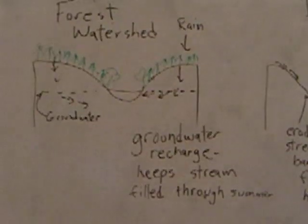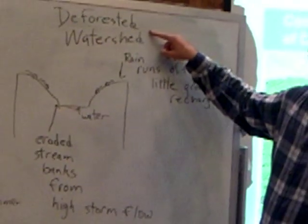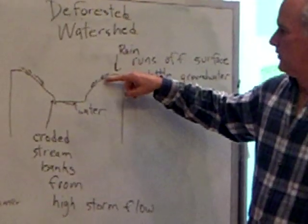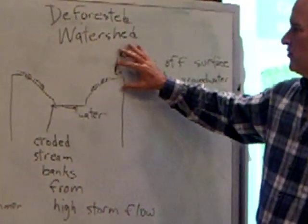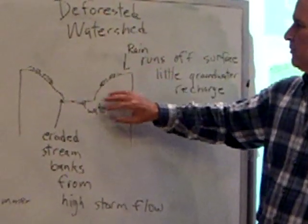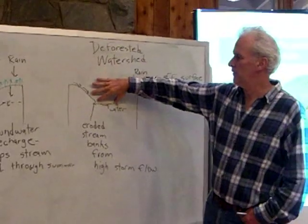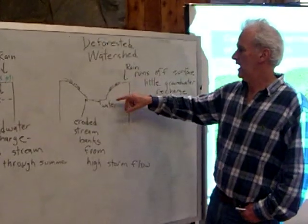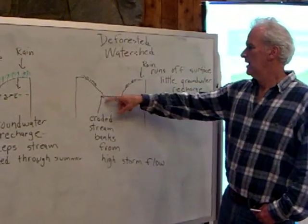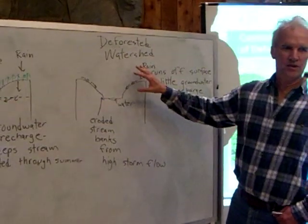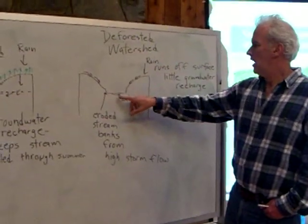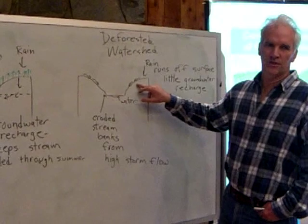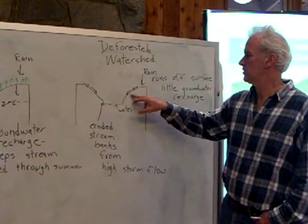In the deforested watershed, when you get rain, most of that water runs off the surface because there aren't trees there - it's just bare soil. What happens is you get a big swelling of the creeks and rivers when you have a degraded watershed like that, and it cuts the stream bank. Then a week later, that water is really low because the water has all run off the surface. It's eroded the soil into the stream.